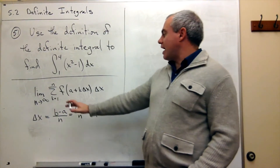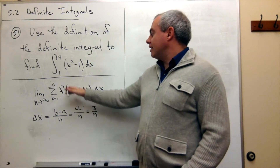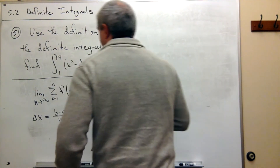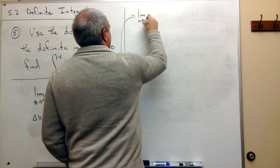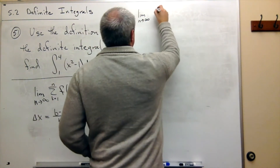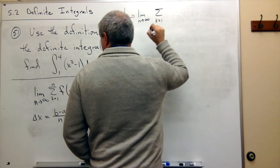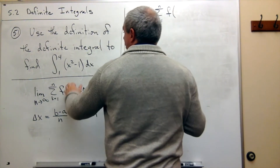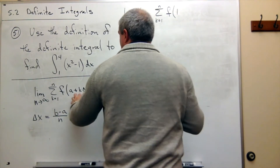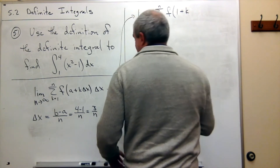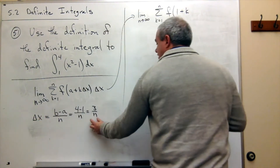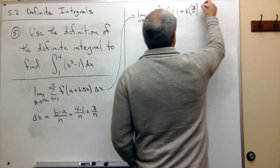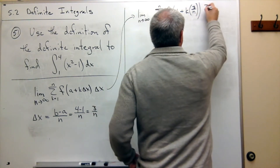We also know what a is — in this case, a is 1. So let's plug some things into this limit and rewrite it. This is the limit as n goes to infinity of the sum k going from 1 to n of f of a, but now we know a is 1, plus k delta x. But we just figured out that delta x is 3 over n. So it's k times 3 over n, times delta x which is 3 over n.